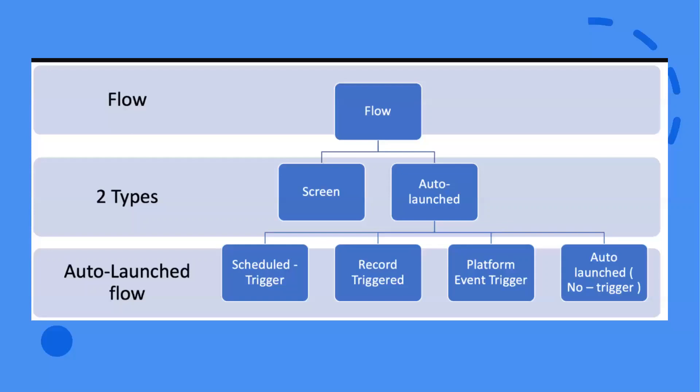Platform Event Trigger Flows run in the background when a platform event message is received. If you're not familiar with platform events, it's best to start with screen flows and record triggered flows first, then move to platform event trigger flows later. The fourth type is Auto-Launched No Trigger Flow, which is used when you want to call a flow from Process Builder.